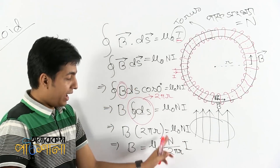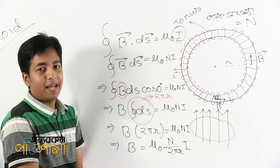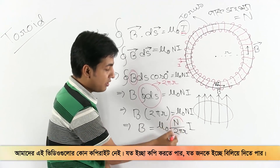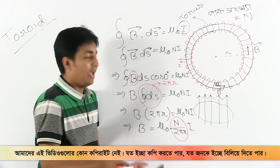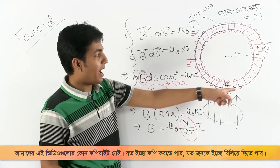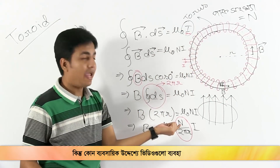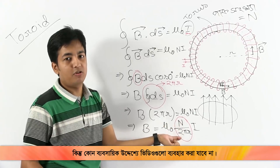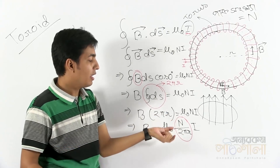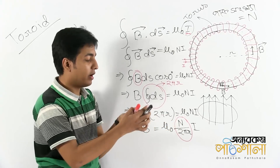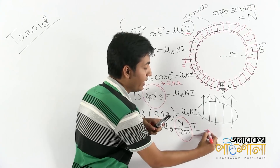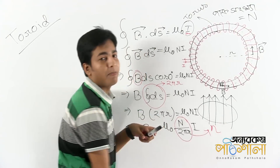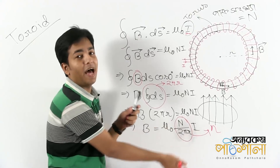So this is not just 2 pi i. What do we call this? We call 2 pi r the circumference, N the total number of turns. So we can write B equals mu naught N i divided by 2 pi r, which simplifies to mu naught n i, where n is turns per unit length.